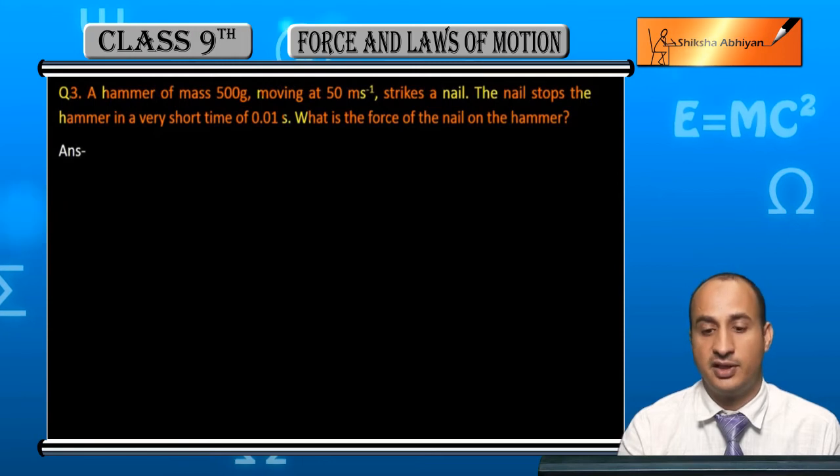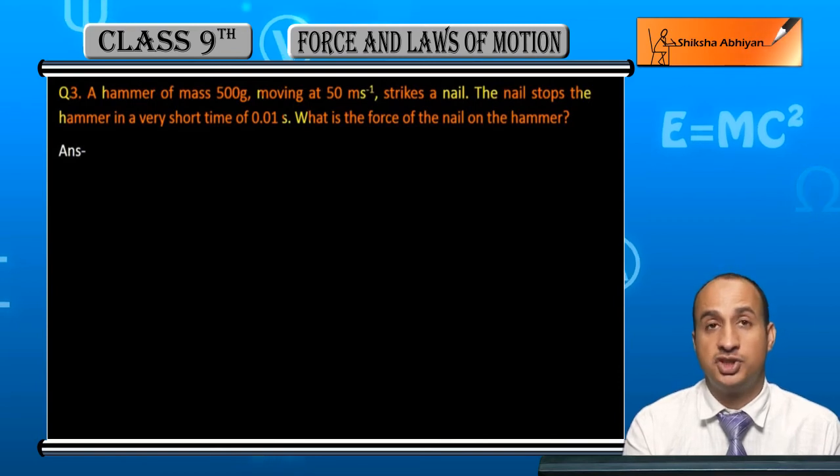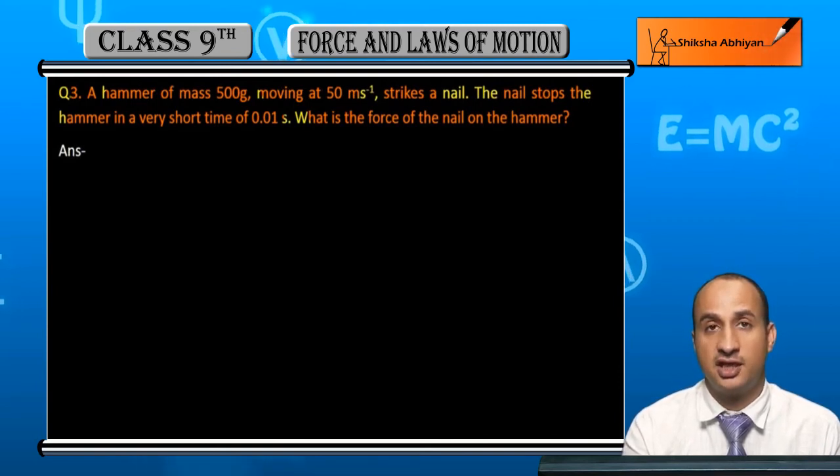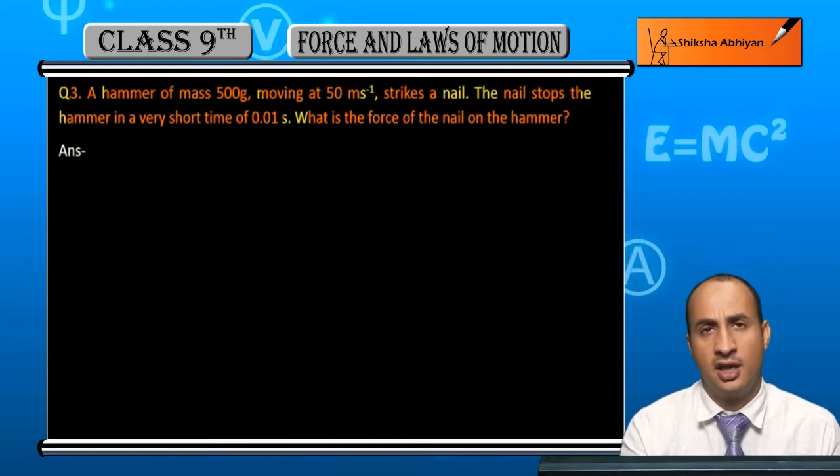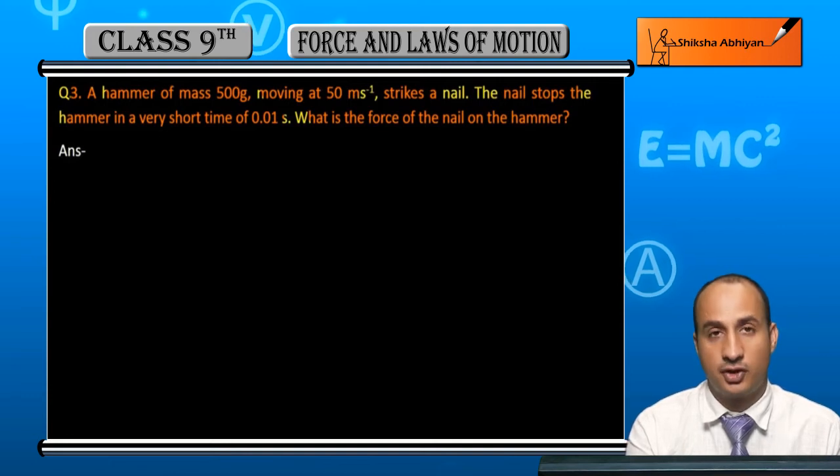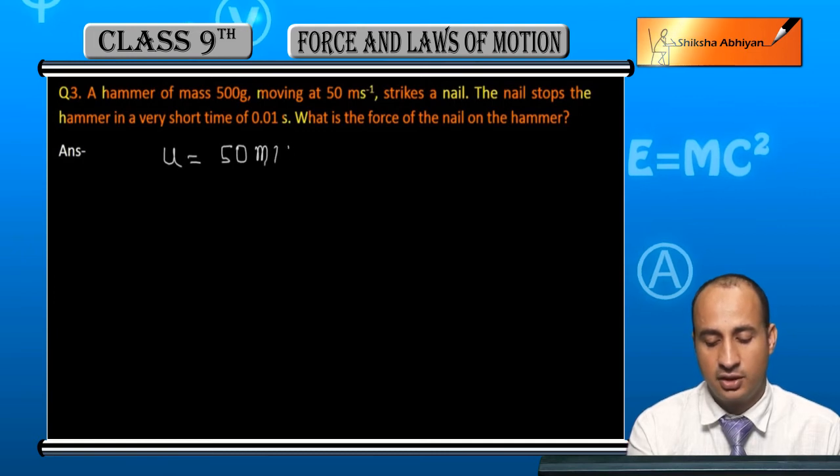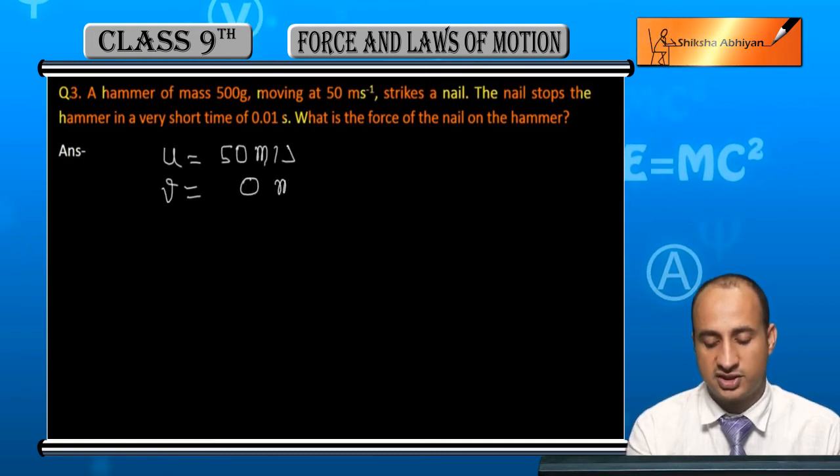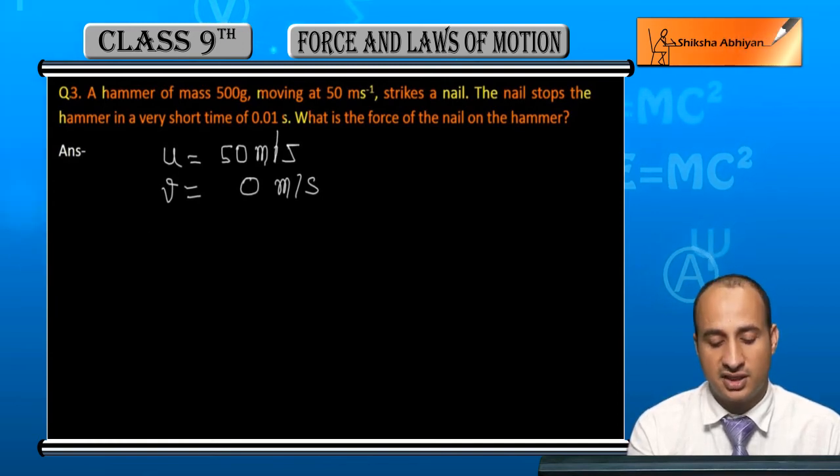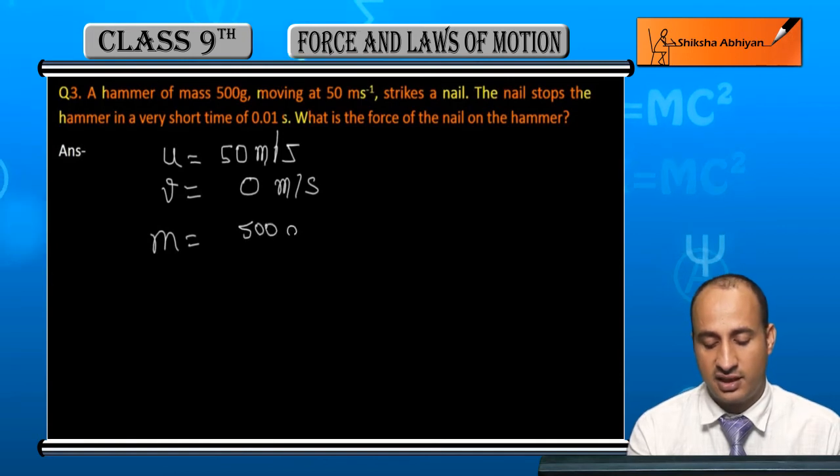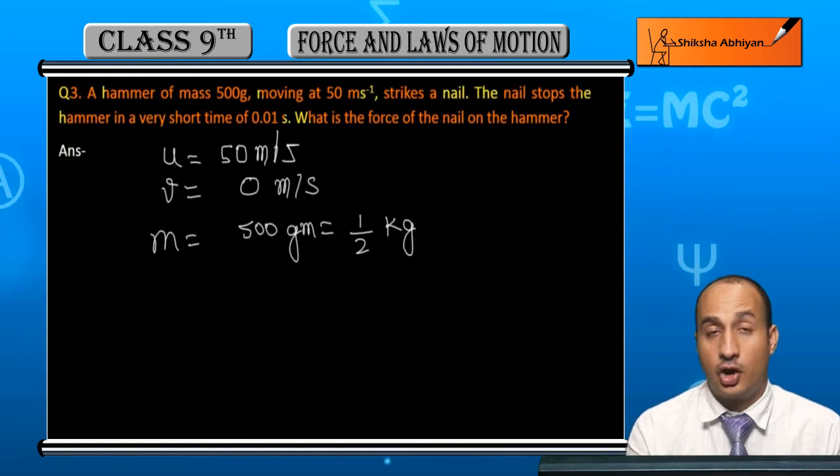To find the force of the nail on the hammer, we need to determine the acceleration. The initial velocity u is 50 meters per second, the final velocity v is 0 meters per second, and the mass m is 500 grams, which equals half a kilogram.